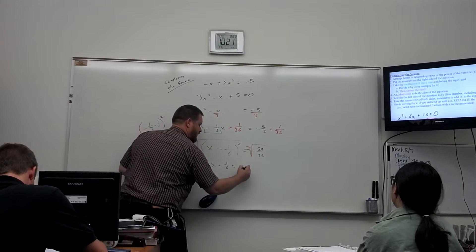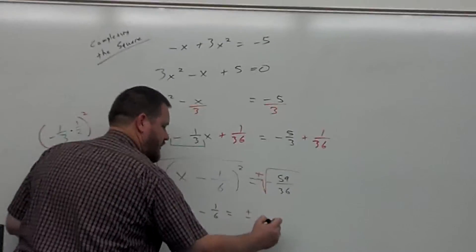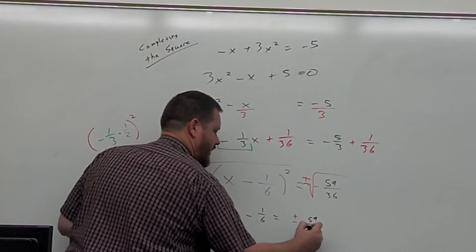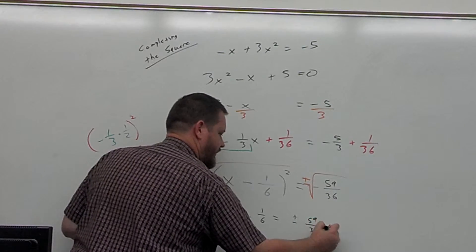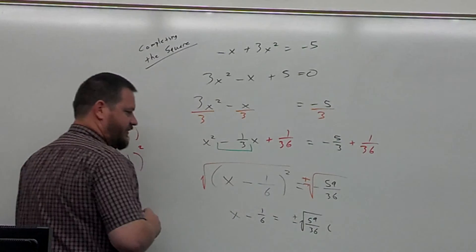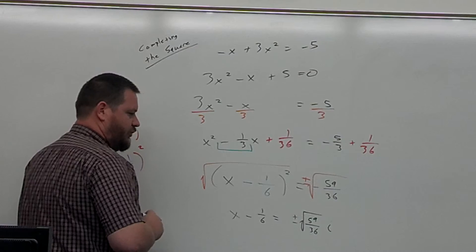So we have equals plus or minus. And we have a negative in here. So it's going to be 59 over 36. The square root of 59 over 36i, which reduces to what?